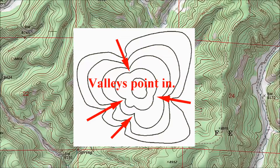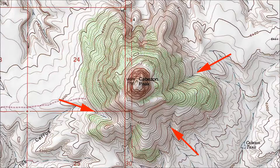Rule number two: where the contour lines bend toward the center of the hill, that's a valley, even if it's a small near-vertical gulch. Here the arrows show three valleys marked by contour lines bending into the peak.